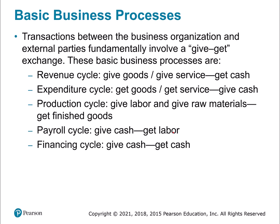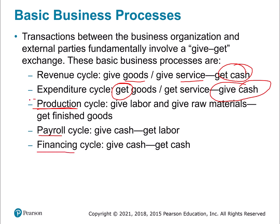We can also think of these in terms of cycles — you'll hit this more in auditing class. Looking at revenue: in the revenue cycle, we give goods or services to our customers and in return we get paid. We give up the goods and services and get cash back. Expenditures are sort of the opposite side — instead of giving goods and services, we're going to get goods and services, and now we give cash instead of getting cash. We also look at production cycles, how we decide what to make and how much; payroll, how we compensate labor; and financing, how we get cash. In this class we're going to focus more on the revenue and expenditure side, as those are typically the most engaging to work with.